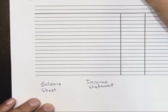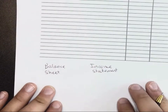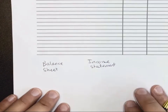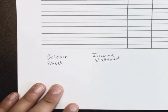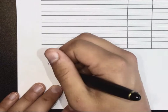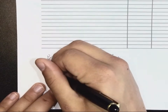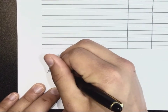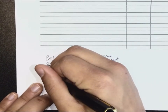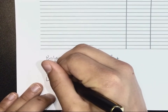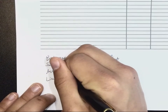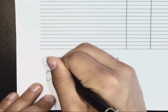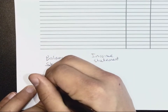There are five different categories of accounts. Which ones fall on the balance sheet? Assets, liabilities, and owner's equity.